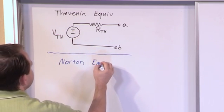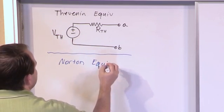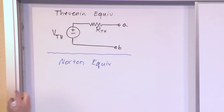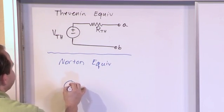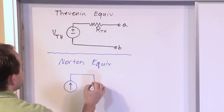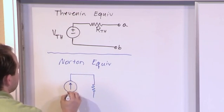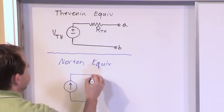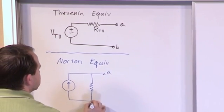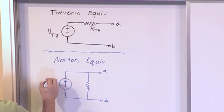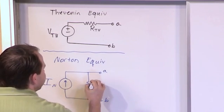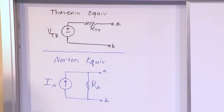So this is a Norton equivalent circuit. And what that's going to look like is it's going to be a constant current source in parallel with a resistor. So typically in the textbook you'll see this current source has a value I sub N for Norton current, and this resistance has a value of R sub N for Norton resistance.